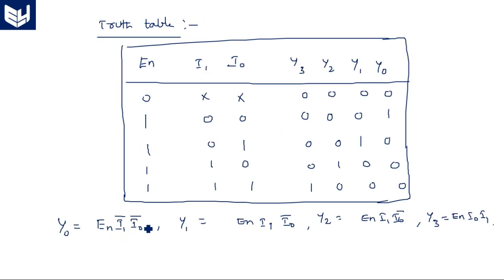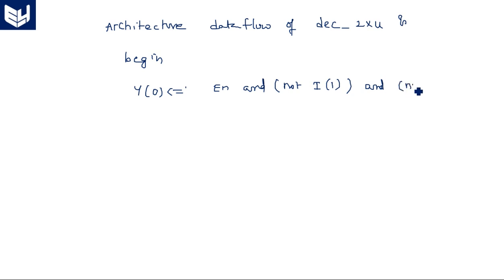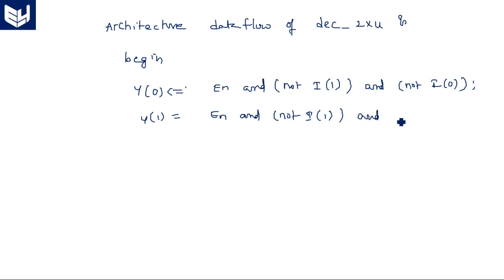The expression for y0 is: enable AND (NOT i1) AND (NOT i0). Similarly y1 is enable AND (NOT i1) AND i0. When writing the code, the AND gate becomes the 'and' operation and the complement becomes the 'not' operation. So: y(0) <= enable and (not i(1)) and (not i(0)); y(1) <= enable and (not i(1)) and i(0).